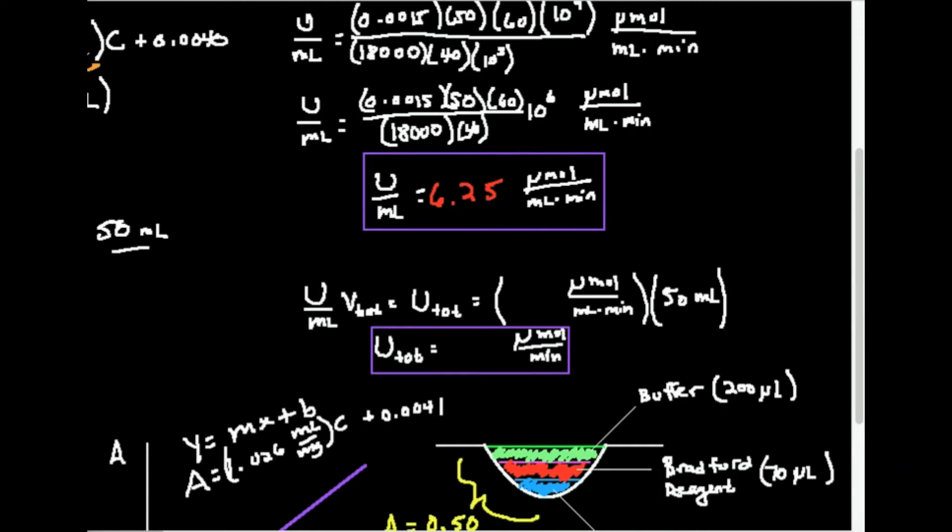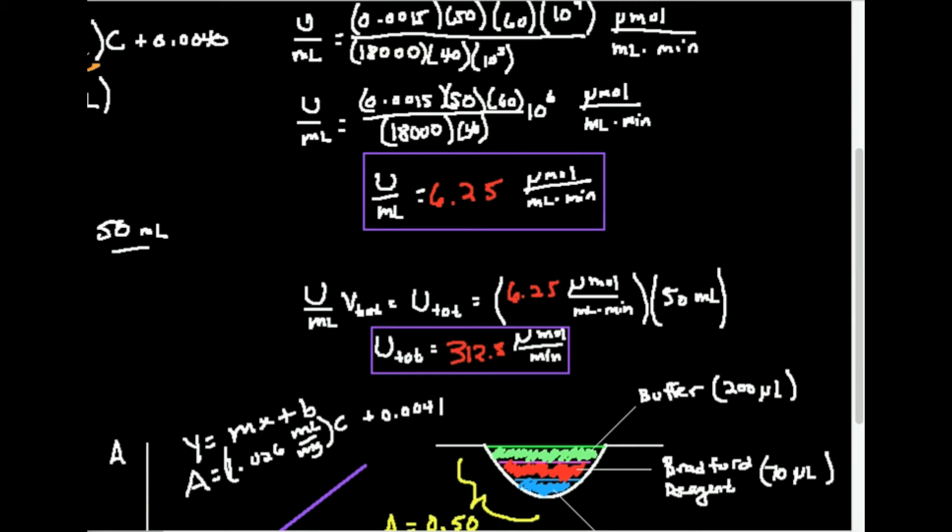So now I want the total activity, just u. So I'm going to take this 6.25 micromole per mil per minute and multiply by the 50 mils. And this turns out to be 312.5 micromoles per minute. So I have that.